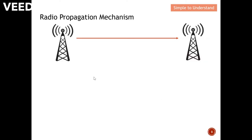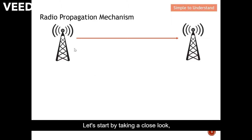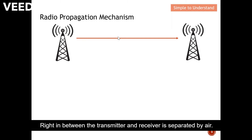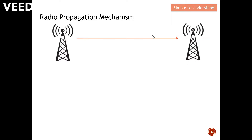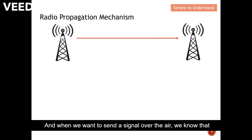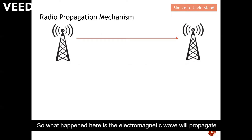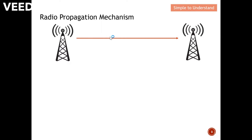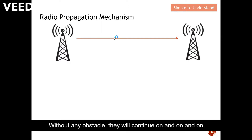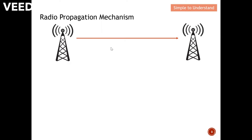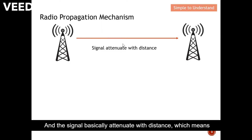Let's start by taking a close look at what is radio propagation. Here we have a transmitter and a receiver. Right in between the transmitter and receiver is separated by air. When we want to send a signal over the air, we need to convert the signal into an electromagnetic wave, and the electromagnetic wave will propagate towards the recipient.